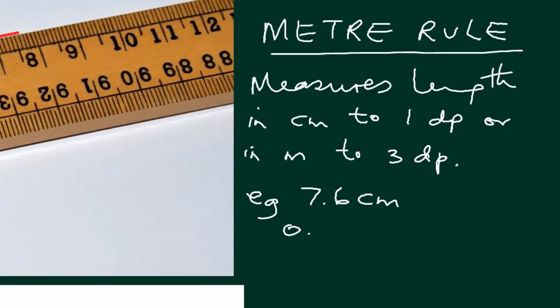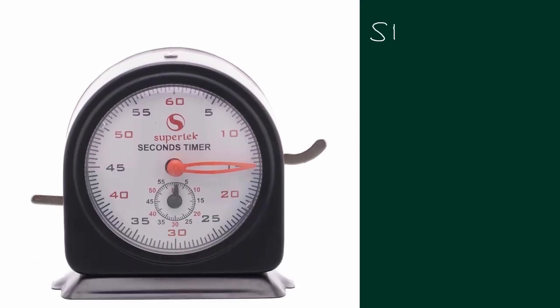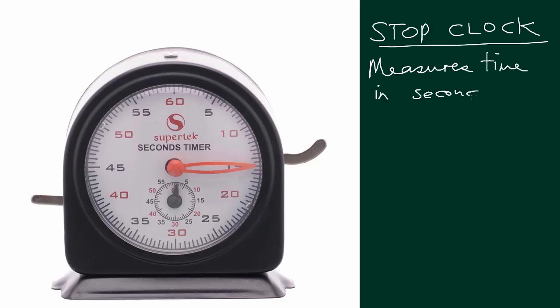We write this as 7.6 centimeters or 0.076 meters. The stop clock is the second one. Stop clock measures time in seconds to one decimal place, and you should end with 0.5 or 0.0.